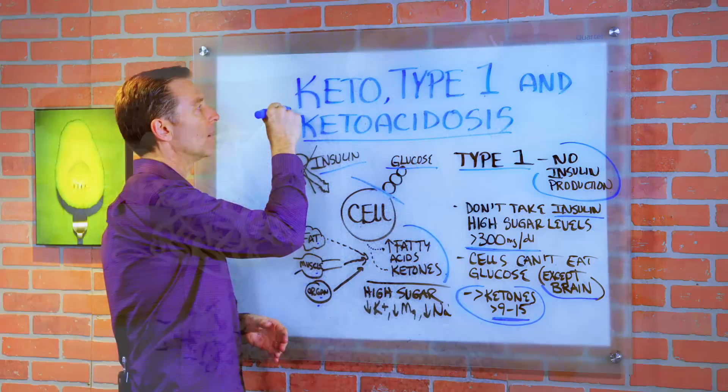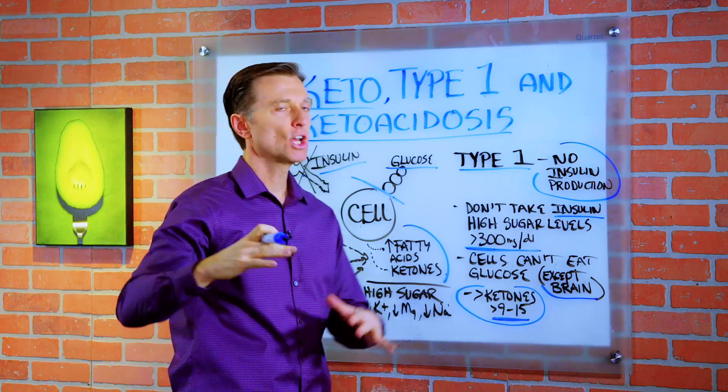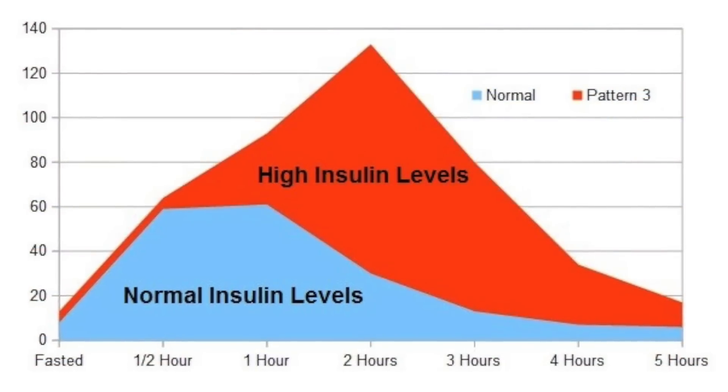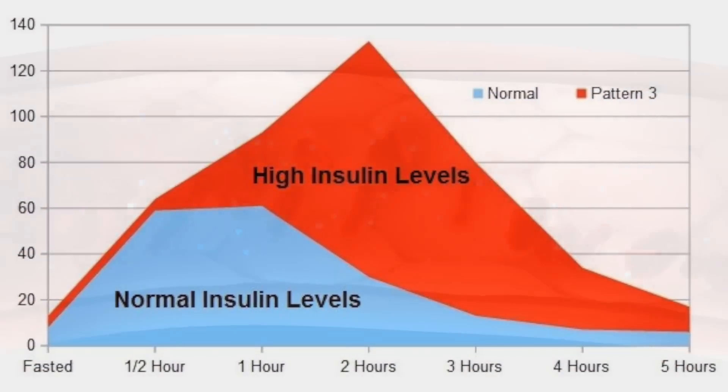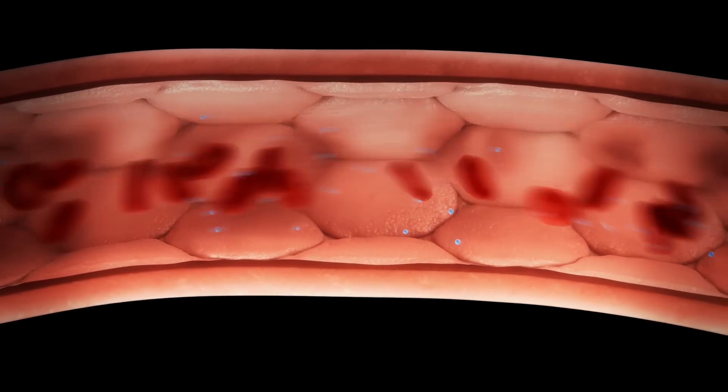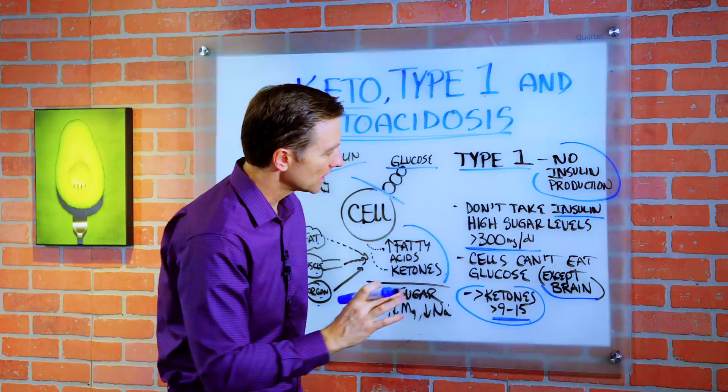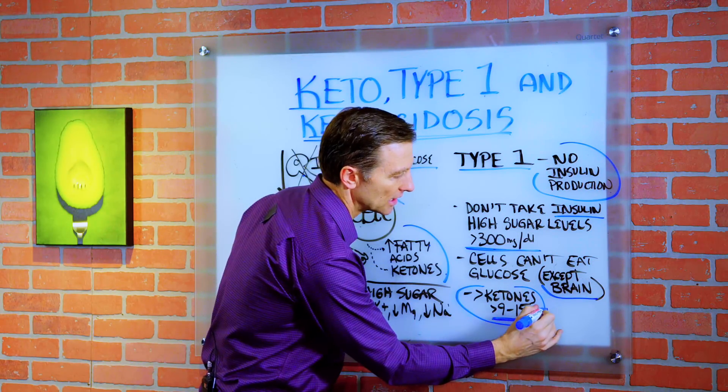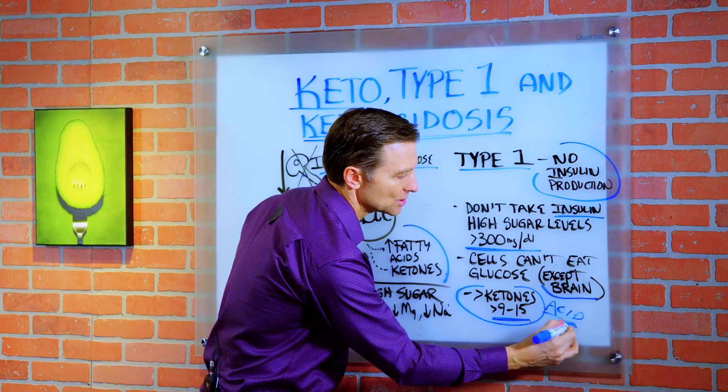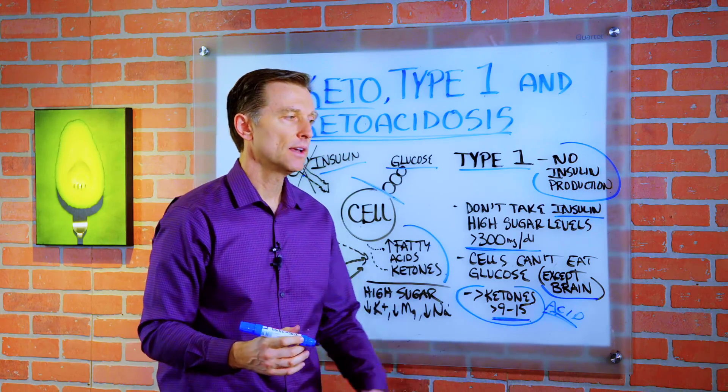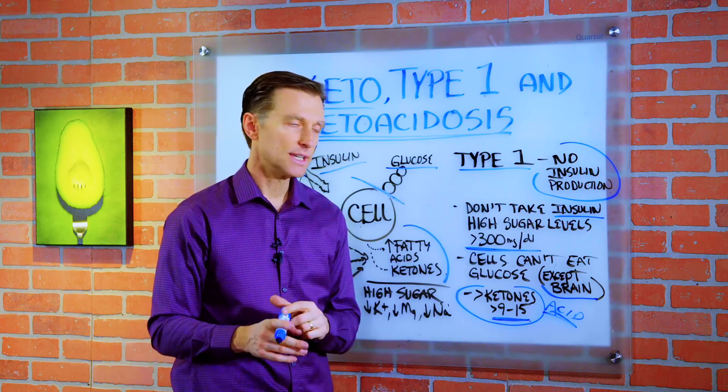When you do keto, the need for insulin goes way, way down. So if you don't have to take as much to regulate your blood glucose, you're going to have less ketoacidosis. Now, realize that when the ketones are that high, you're getting a lot of acid in the body. So your pH can change to go more on the acid side, and that's very dangerous.